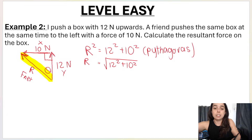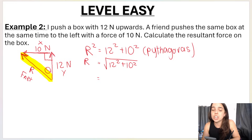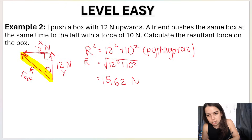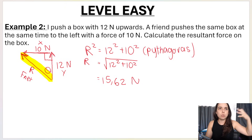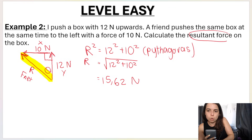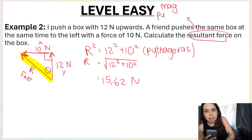Rounding off to two decimal places — which is allowed for a final answer — I get 15.62 newtons. Always think back to what the question is asking: the resultant force means you need the magnitude, which we always find using Pythagoras in these types of questions.